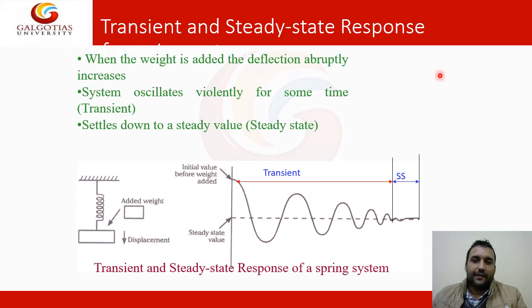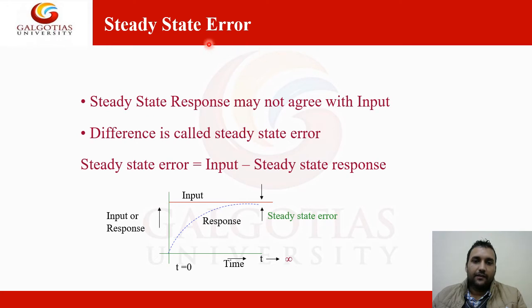Here is a transient and steady state response of a spring as shown. When a weight is added, the deflection increases. In this case, if there is no weight, some deflection is also there due to self weight or self gravitational pull. If the weight is added further, then this displacement increases. System oscillate violates for some time, that is transient. And settle down at a steady value, that is steady state. The system is some transient is there. Then after this, it is the steady state. Its amplitude gets low down, it is almost stable.